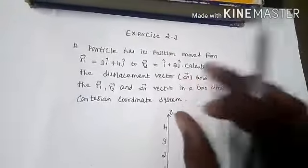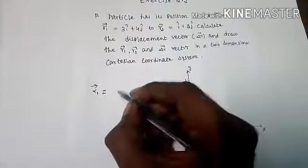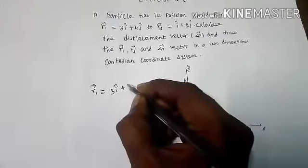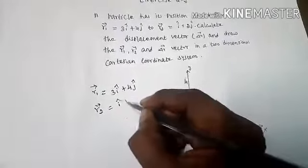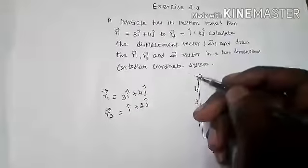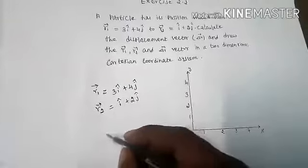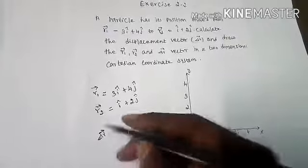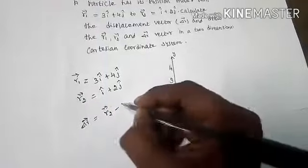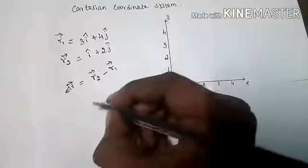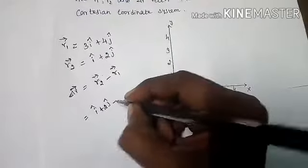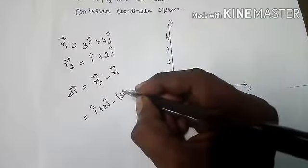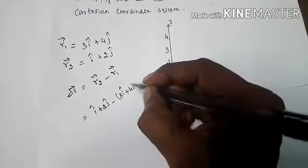In this question, the given values are: R1 vector equals 3i-cap plus 4j-cap, and R2 vector equals i-cap plus 2j-cap. Now let's find out ΔR vector. ΔR vector is the displacement vector. The formula is ΔR = R2 vector minus R1 vector. So R2 vector value is i-cap plus 2j-cap, minus R1 vector which is 3i-cap plus 4j-cap.